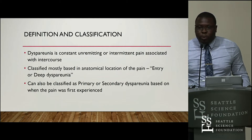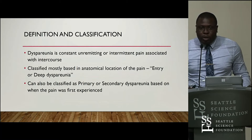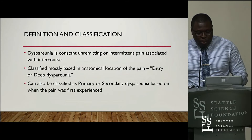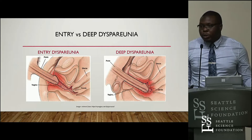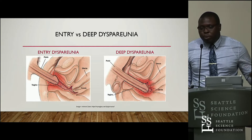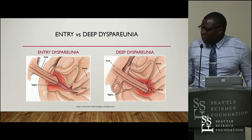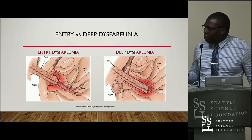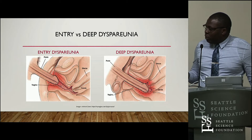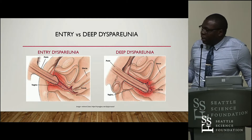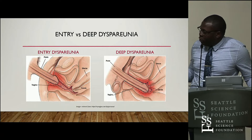Primary vs. secondary classification is based on when the patient first experienced the pain. It's primary if it was upon the very first sexual intercourse, and secondary if it occurs later after the first intercourse. As you can see in the picture, entry dyspareunia involves the entrance into the vagina and around the vulva, and deep dyspareunia involves pain deep in the inner wall of the vagina all the way to the cervix, potentially involving all the pelvic organs as well.